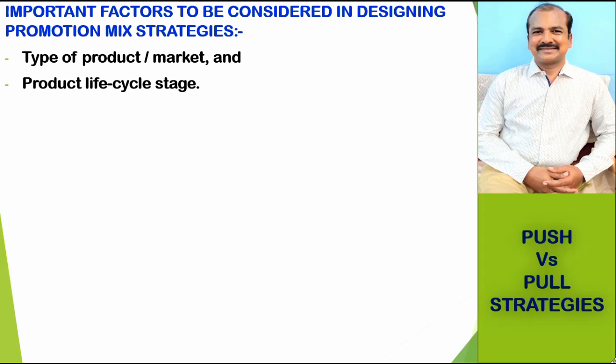In the maturity stage, buyers know the brands and advertising is needed only to remind them of the product. In the decline stage, which is the last stage of a product's life cycle, advertising is kept at a reminder level, public relations is dropped, and sales people give the product only a little attention, whereas sales promotion is heavily used as a promotional tool for disposing of the product which is about to die in its life cycle.